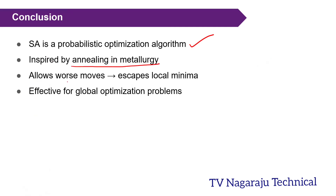In conclusion, simulated annealing is a probabilistic optimization algorithm inspired by annealing in metallurgy. It allows worst moves for escaping the local maximum and is effective for global optimization problems. In the next session we are moving to genetic algorithm. If you like this video, please subscribe to our channel. Thank you.